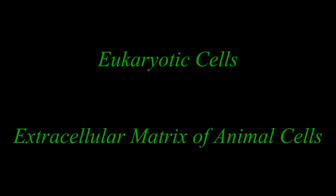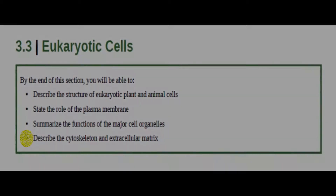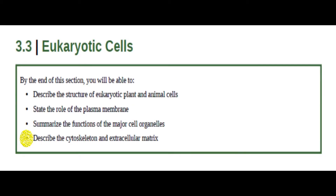Welcome back to Concepts of Biology. We'll continue to read Chapter 3, Section 3.3, Eukaryotic Cells — Extracellular Matrix of Animal Cells. By the end of this video, you will be able to describe the cytoskeleton and extracellular matrix.